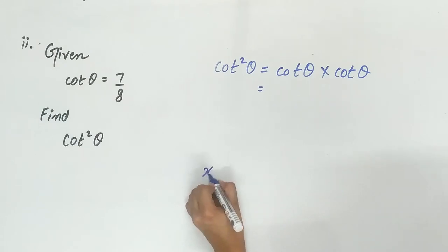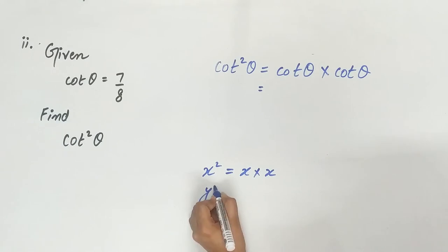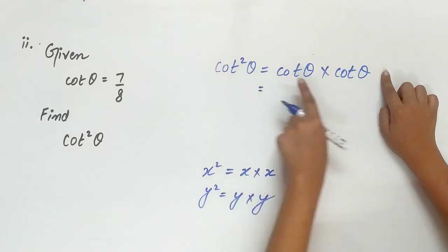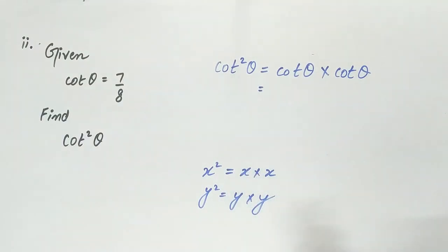It's similar to x square is equal to x multiply x, y square equals to y multiply y. Similarly cot square theta is equal to cot theta multiply cot theta. Remember cot square theta and cot 2 theta are different.